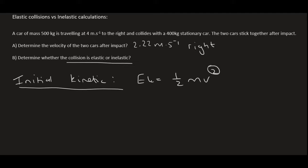This formula is given to you in the test. So we can say the first object was a half and its mass is 500. It was initially traveling at 4. Plus, we'll do the second object, which has a mass of 400, but it was stationary. You can then type this all in on the calculator and you will get an answer of 4,000. And the unit of energy is joules.